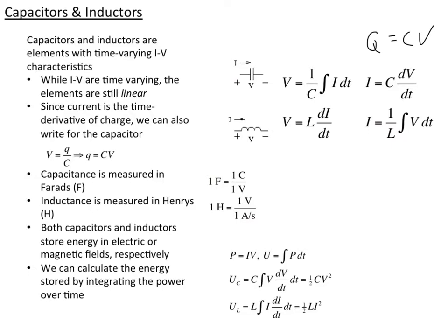In both cases, capacitors and inductors store energy — in the electric field for the capacitor and the magnetic field for the inductor. We can calculate this by integrating power over time. Power is the current times the voltage instantaneously. If we integrate that, we get the total energy. So in a capacitor, we integrate by writing I in terms of dV, and we have V dV. When we integrate, we get one-half V squared. So the energy stored in a capacitor is one-half C times the voltage squared.